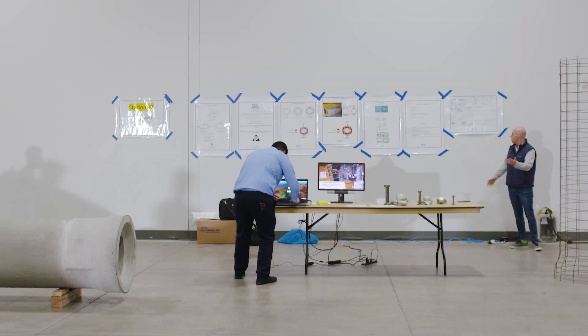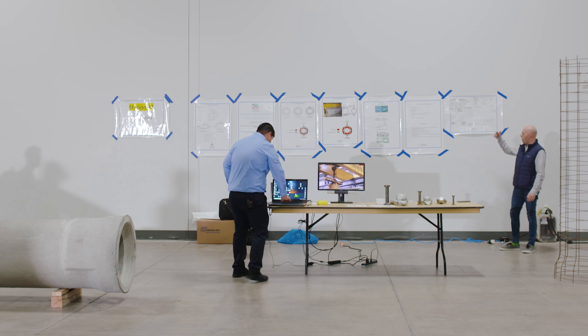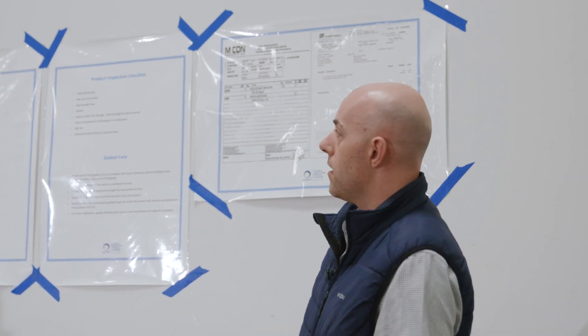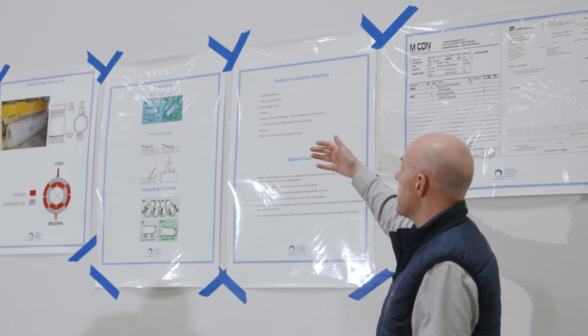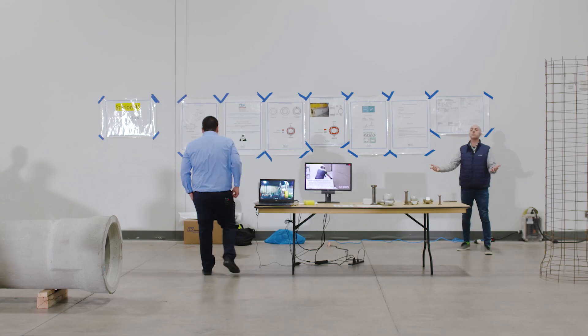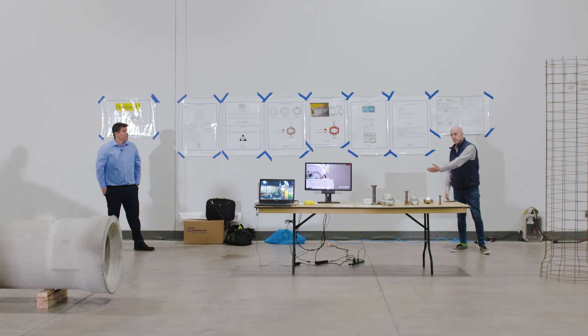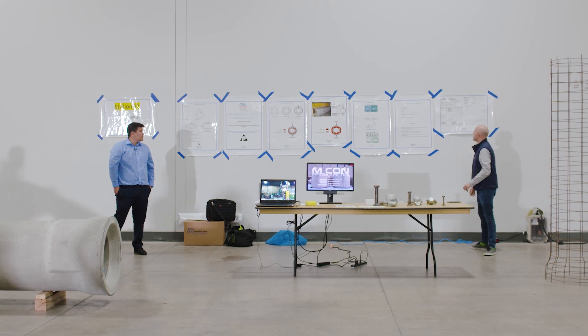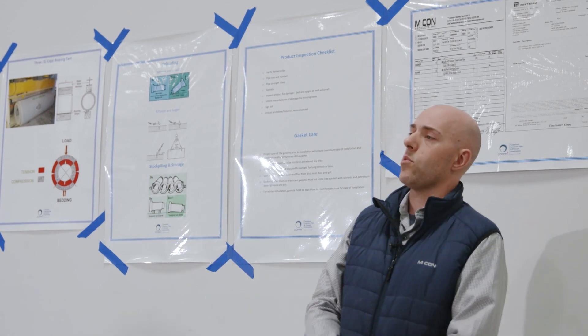In this case, 43 450 class 140D pipe came to site. All 43 of those pipes are supposed to have 43 gaskets. Just running through this checklist simply, you verify your delivery slip, the pipe size and the number, the pipe strength class. Let's say there might be multiple runs of similar pipe but different classes. You have 100D run on one side and a 140D run on the other side, you don't want to mix them up. So it's critical that they point those things out. So 43 pipe, 43 gaskets, and they have to inspect every piece of product that comes to site.